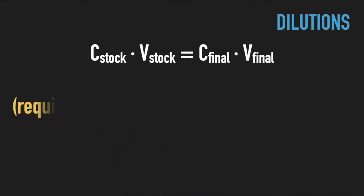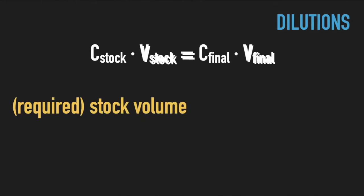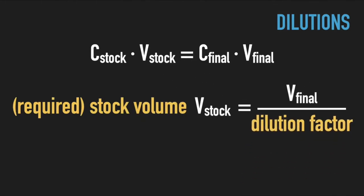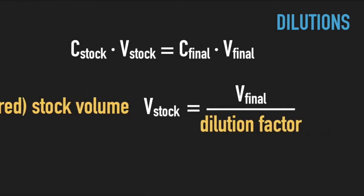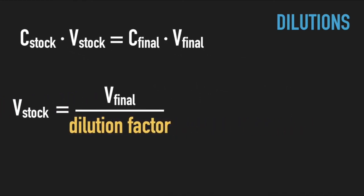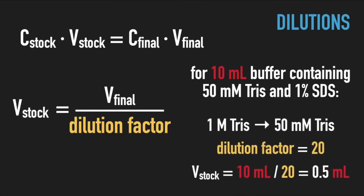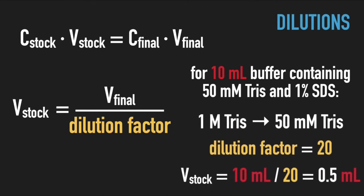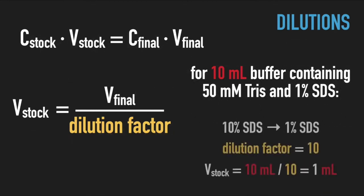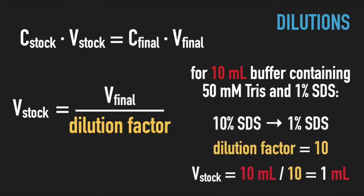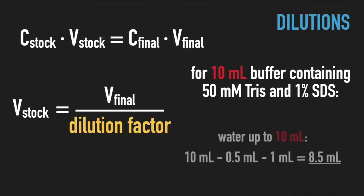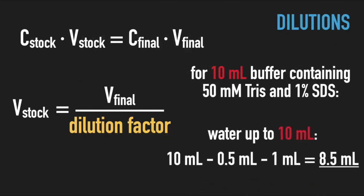Once you know the dilution factor, the required volume is calculated by dividing the final volume by the corresponding dilution factor. Thus, to make a total of 10 milliliters of the buffer containing 50 millimolar Tris and 1% SDS, we need to mix 500 microliters 1 molar Tris stock and 1 milliliter 10% SDS stock, and fill it up with water to a final volume of 10 milliliters.